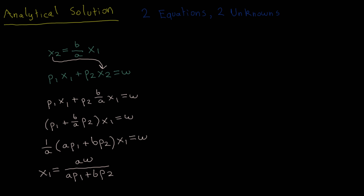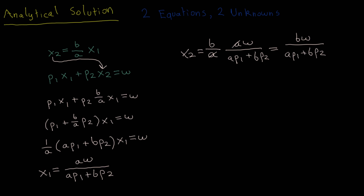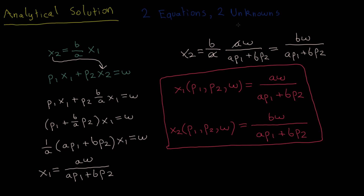To get the demand function for good 2, plug the demand function for good 1 into the first equation: x2 = (b/a)·(aW / (a·p1 + b·p2)). The a's cancel, leaving x2 = bW / (a·p1 + b·p2). The solution can be expressed as two demand functions presented in the red box.